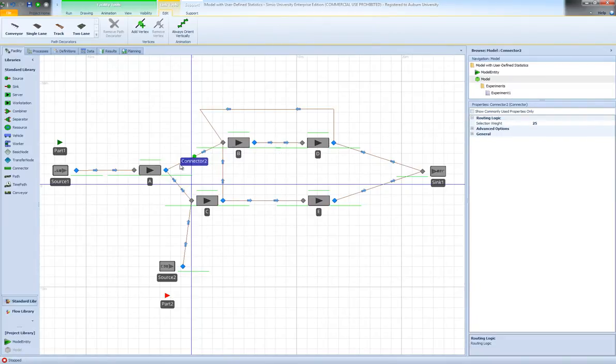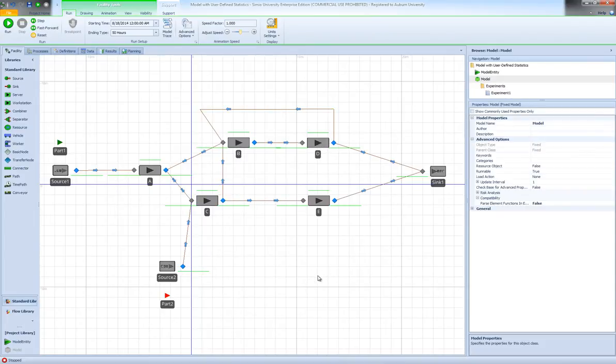So we have 25% of parts going from A to B, 75% to C, and similarly we have the probability of 0.3 of going back to station B after being processed in D. So with the initial model, let's go ahead and implement the logic for our user-defined statistics.